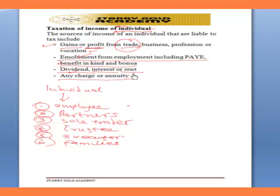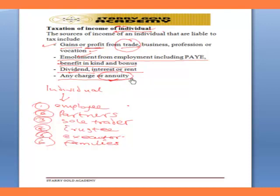Any charge or annuity is also a source of income liable to tax. Annuity here refers to money kept aside to grow into the future. For example, if you plan to save and accumulate say 10 to 20 million over 10 to 20 years, the money you receive after that period is regarded as annuity, because you are paying some amount periodically in order to reach your target.